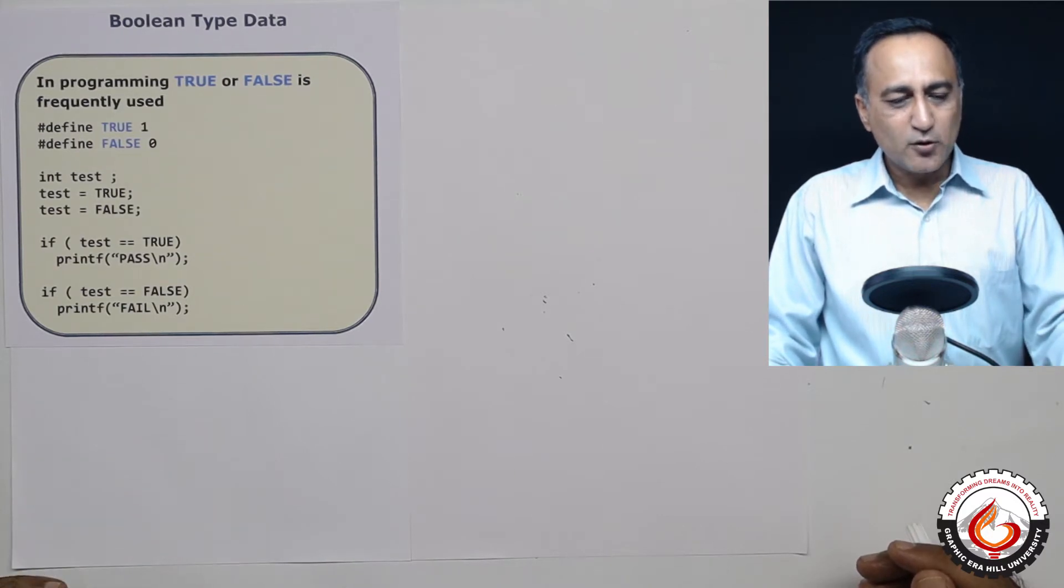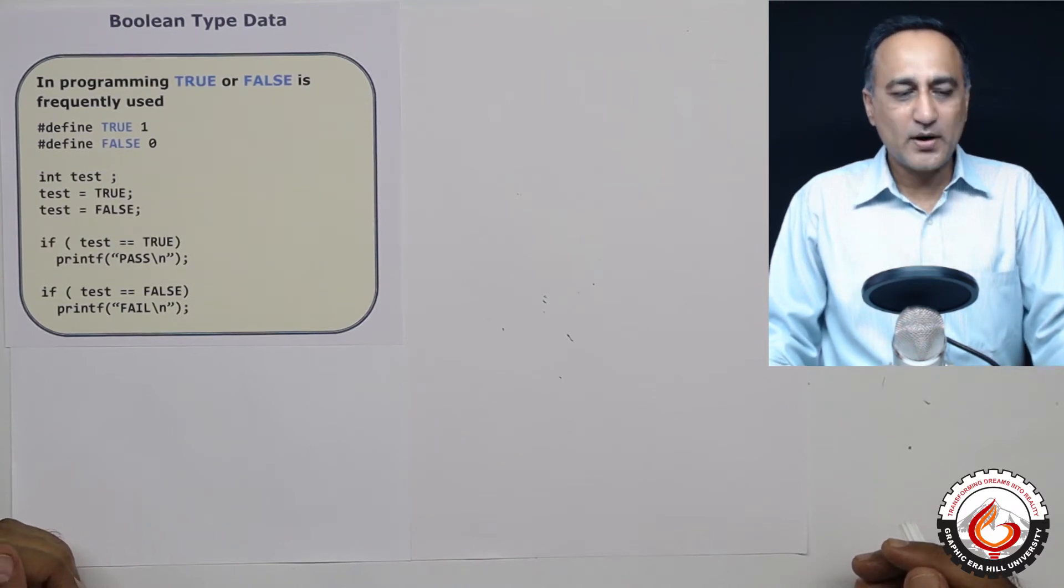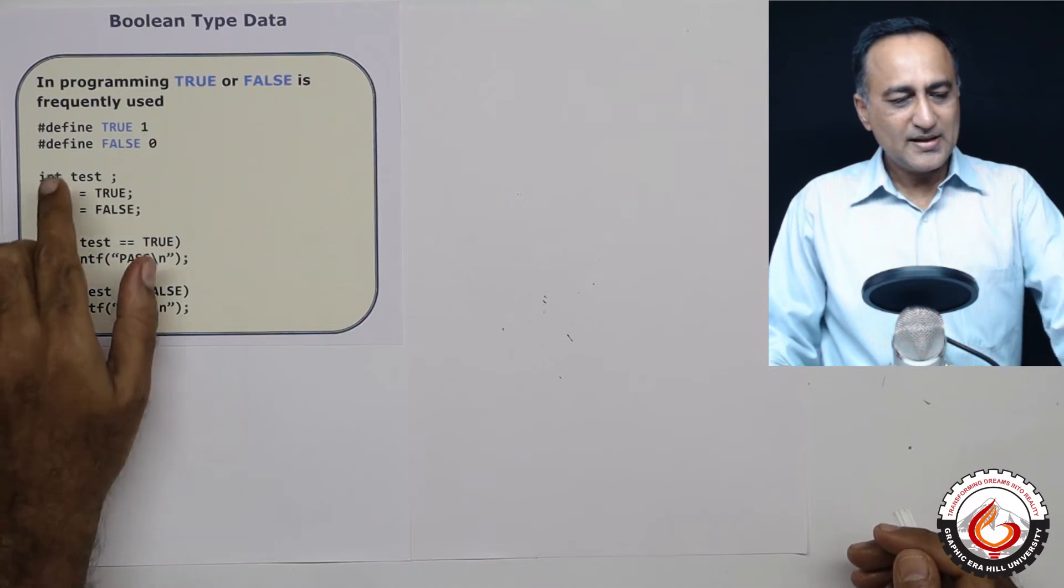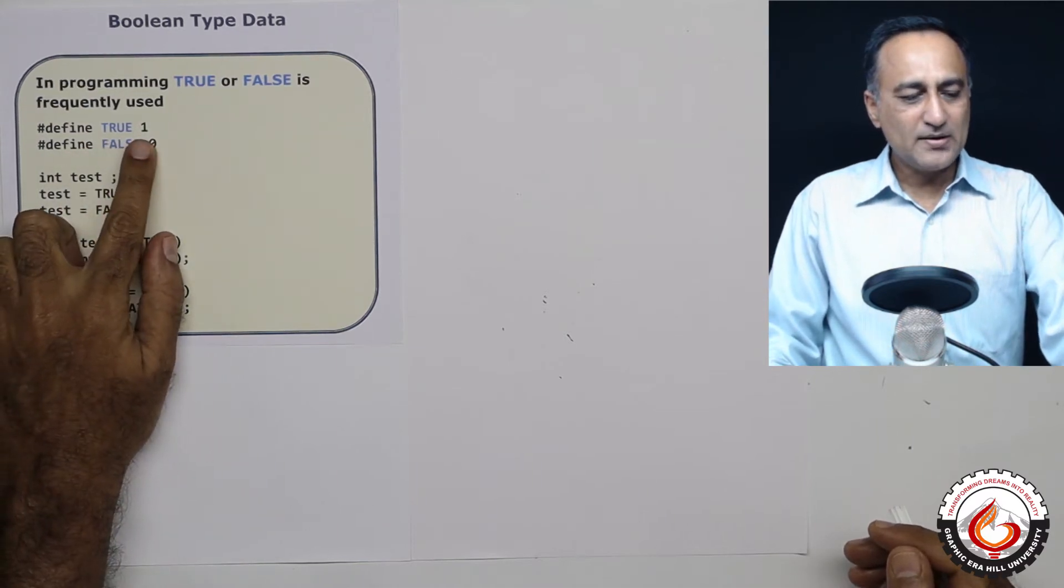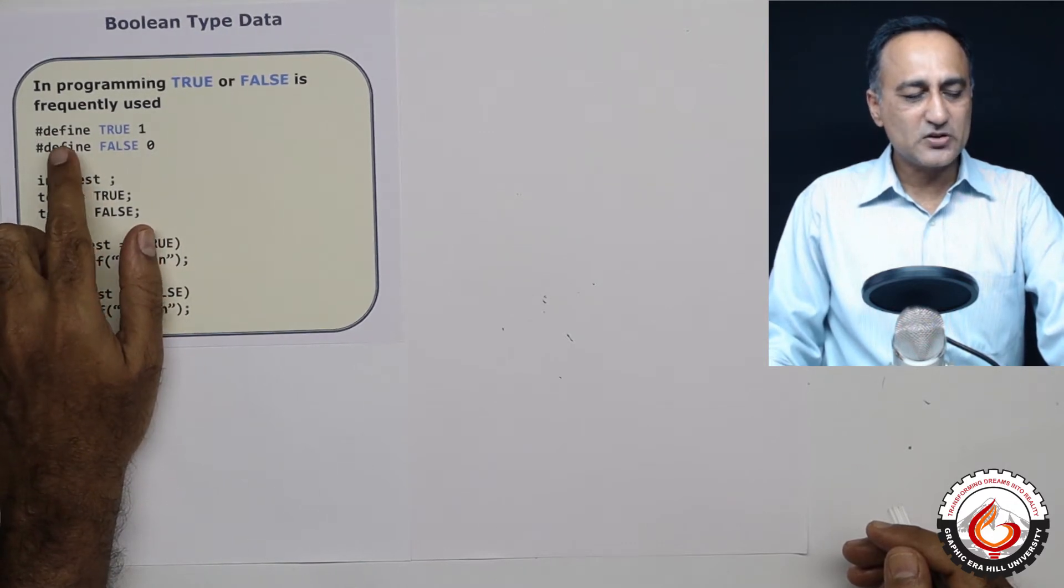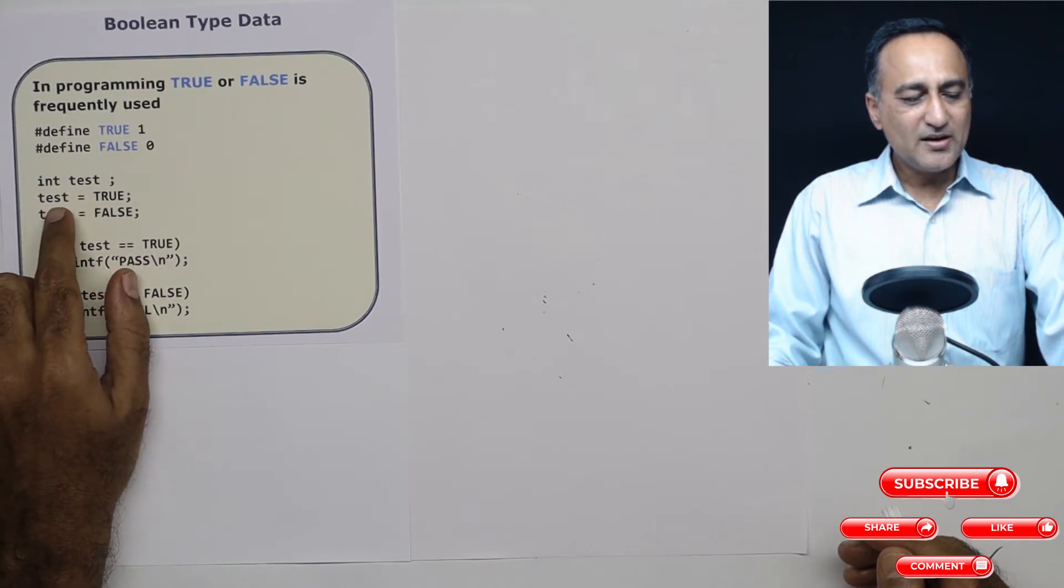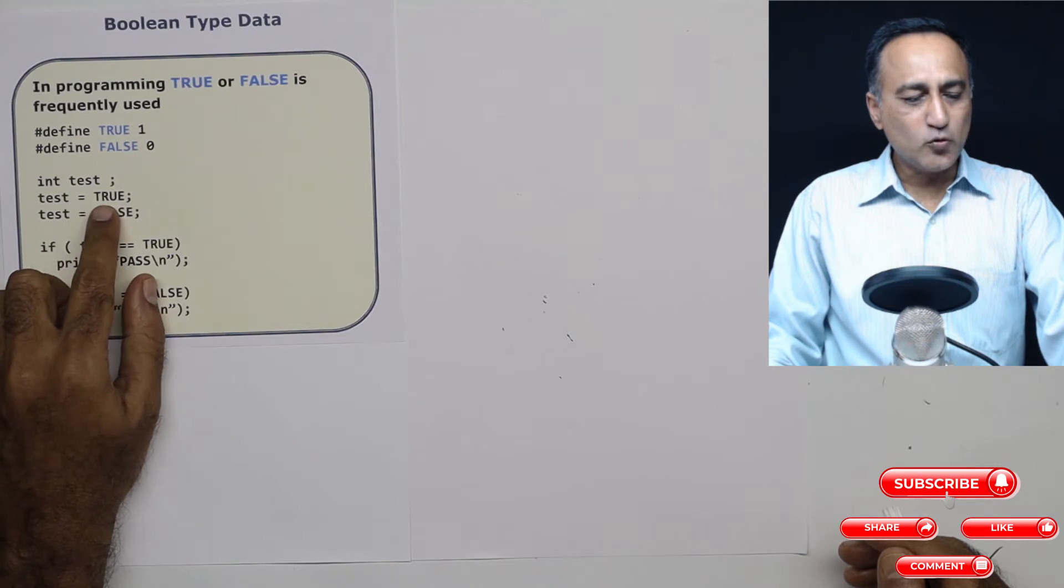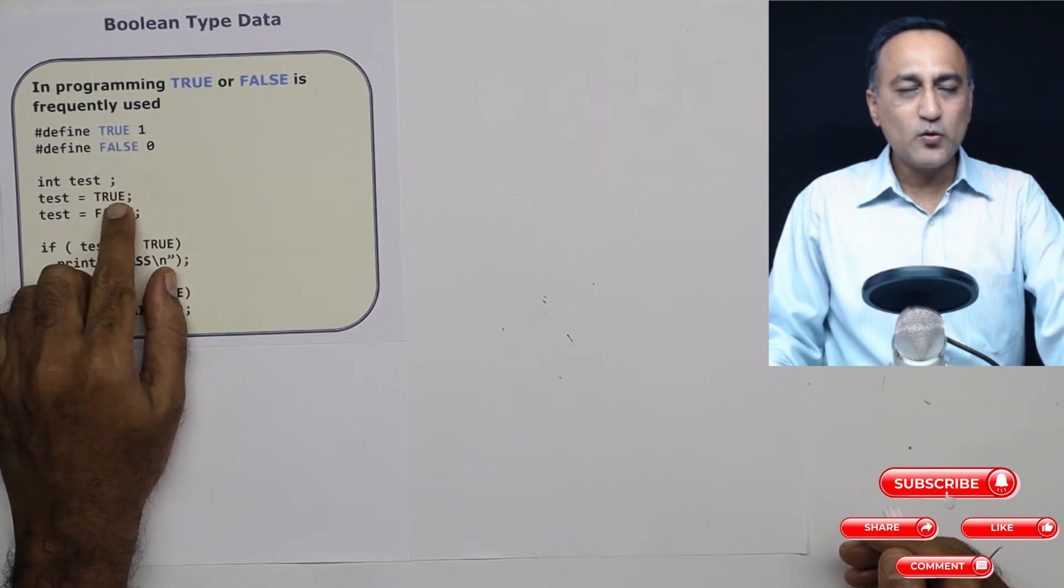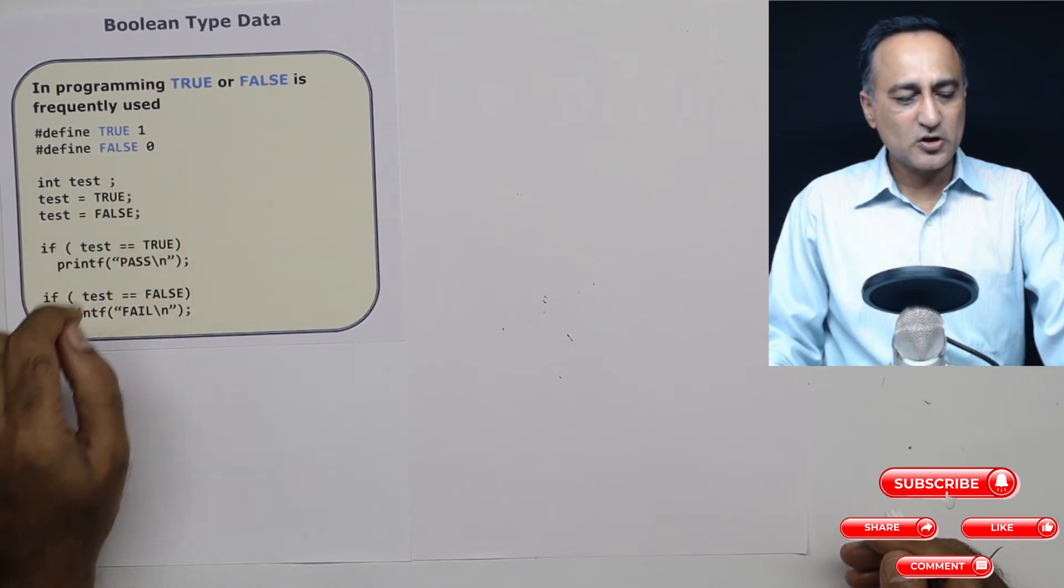Before we actually go to taking a look at how do you declare a Boolean type of data, I just want to help you understand the concept of true and false. Let's say I define true as one, and I define false as zero. So these are preprocessor directives. What I am doing is I have defined a variable called test of the type integer. So when I say test is equal to true, the first time test will take the value one. Now I'm changing the value of test with false, I make it zero.